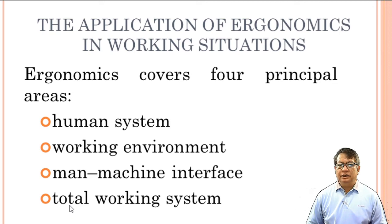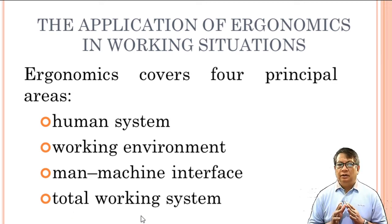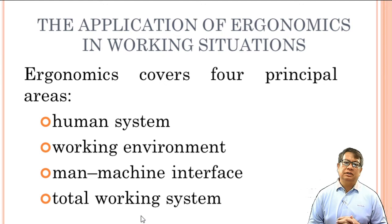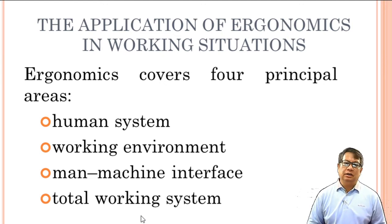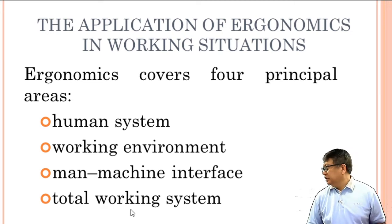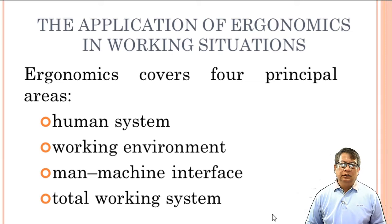The fourth principal area is the total working system — the whole system. How does ergonomics affect the whole system or the whole operation of the organization, company, or industry? That is why we have to consider the total working system as one of the areas of consideration.